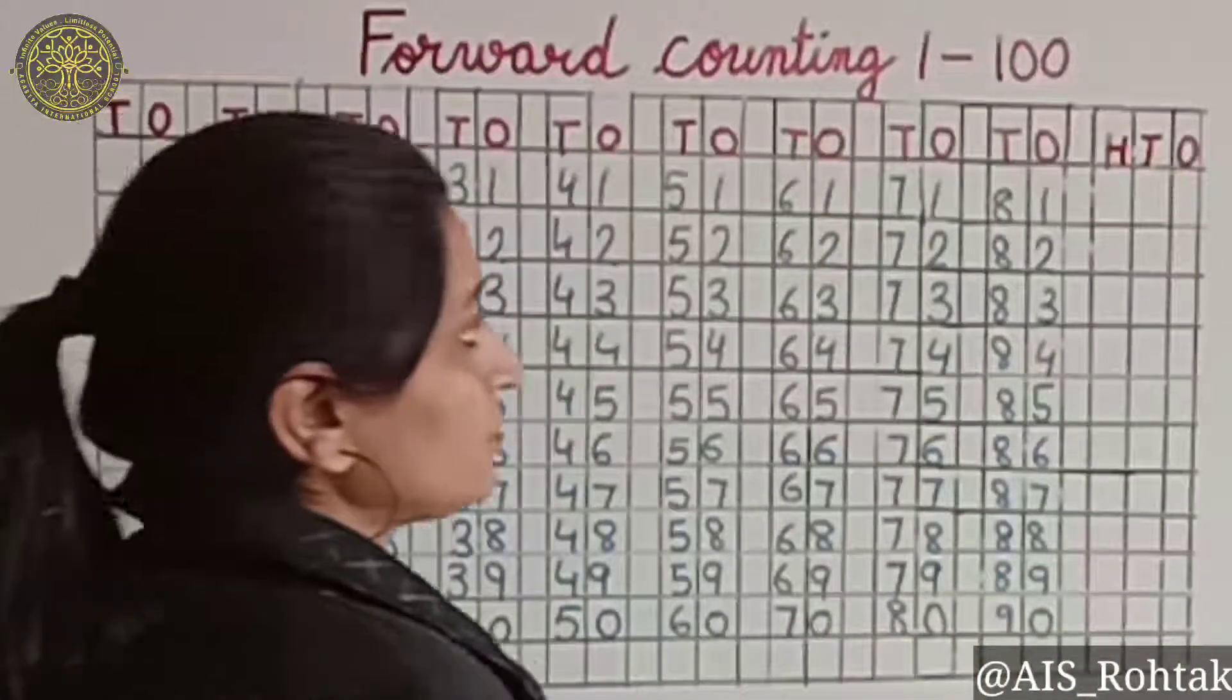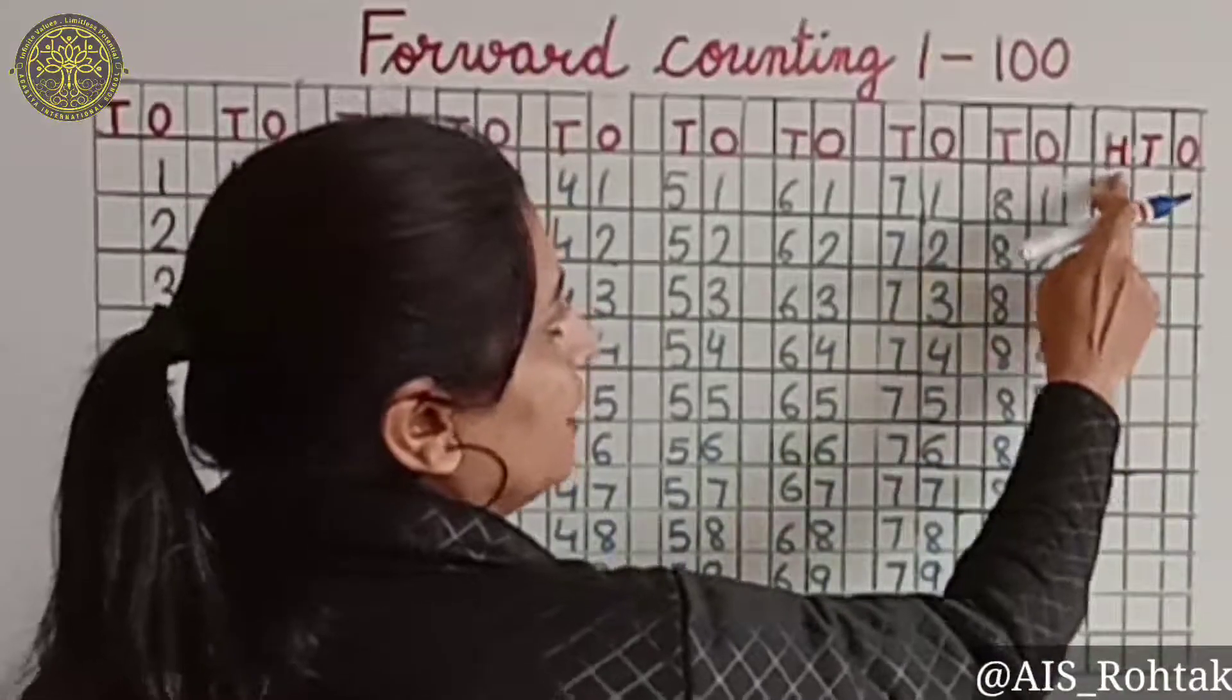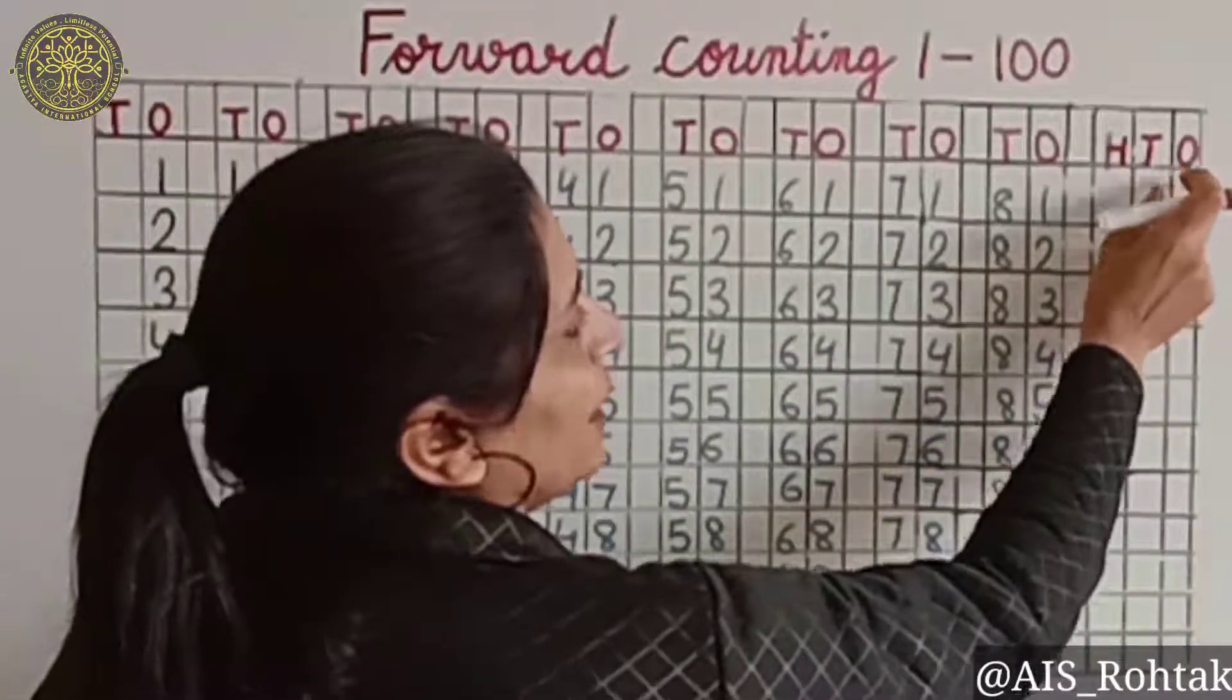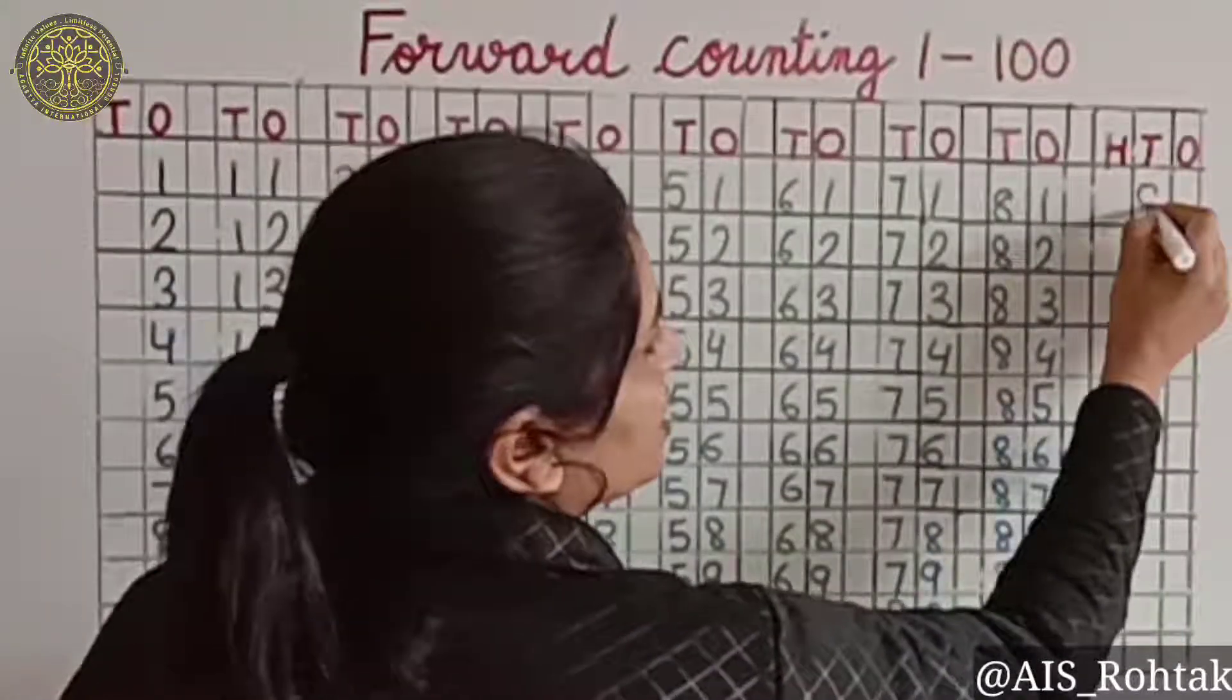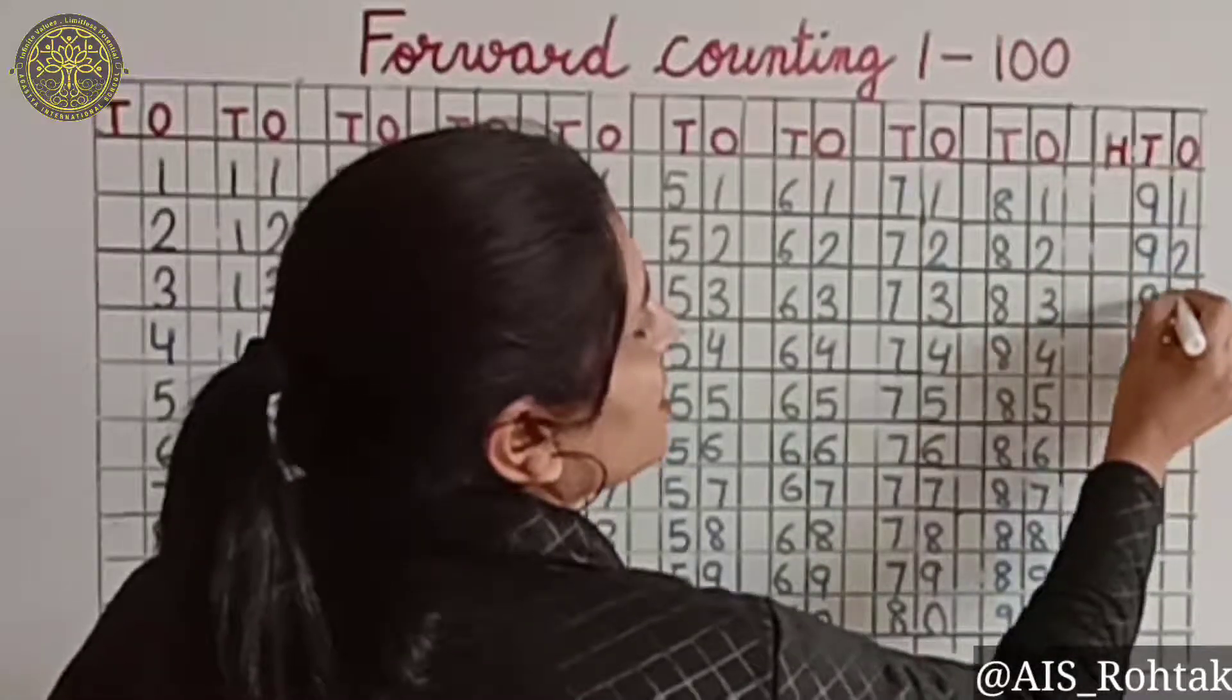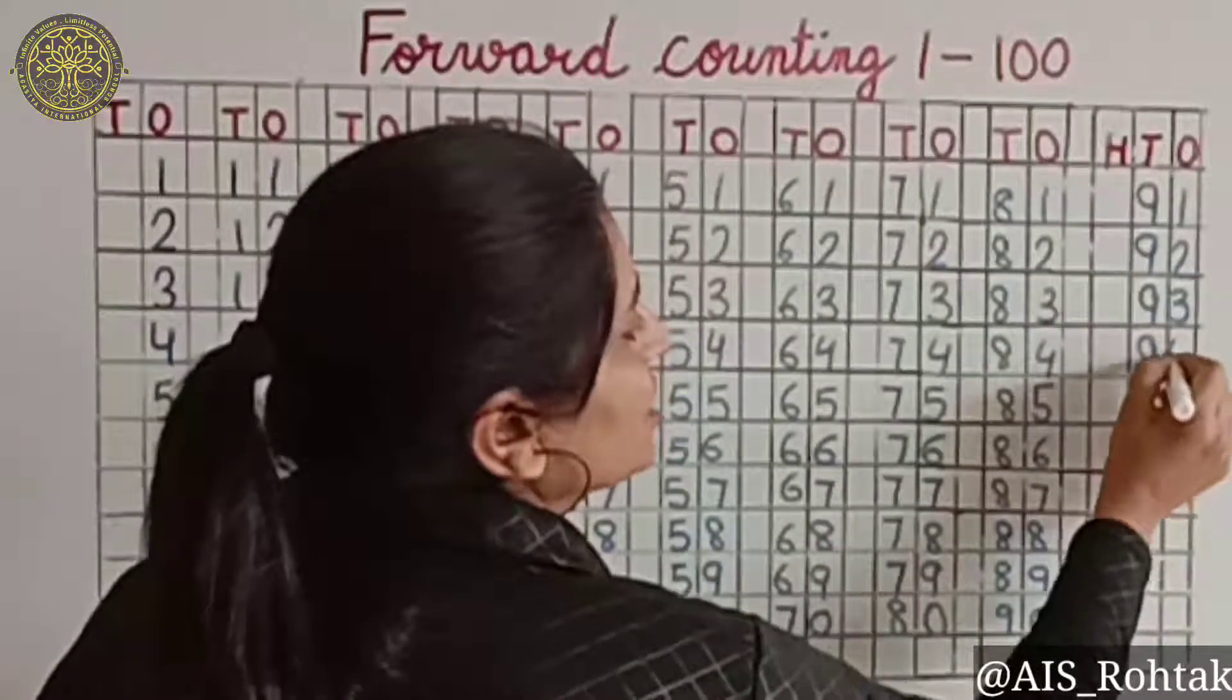Here I have written 100, tens and ones. And we have two lines. Next row, tens and ones. 91, 92, 93, 94.